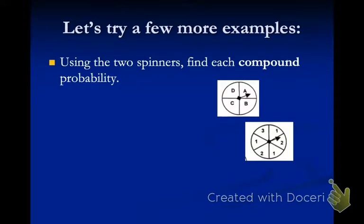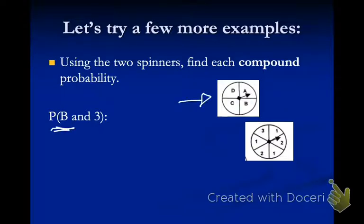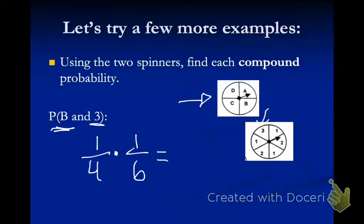Using two spinners, find each compound probability. What's the probability of a B and a three? With spinners, I can't take one out, so we're dealing with independent probability. The probability of getting a B — looking at the first spinner — is one out of four: there is one B and four options. Then the probability of spinning a three on the second spinner is one out of six: there is one three out of six sections. Because it says 'and,' I multiply those together to get one out of twenty-four, which is four point two percent.